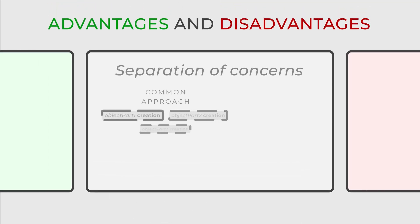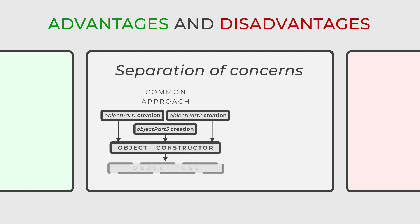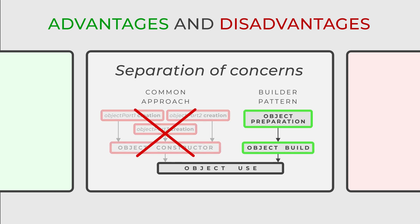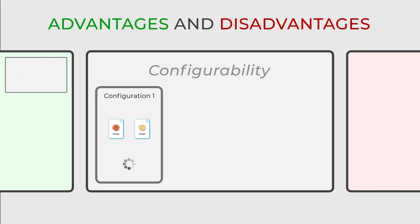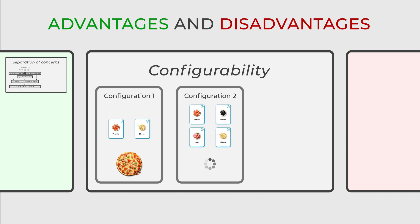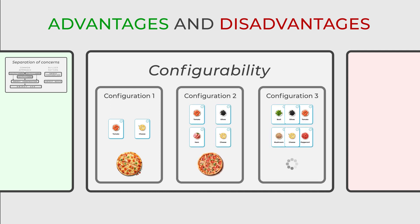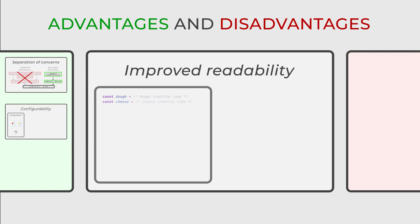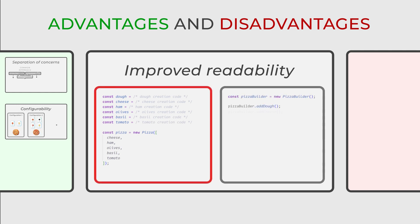The design pattern offers several benefits. Firstly, it promotes the separation of concerns, effectively segregating the build process from the client code. This separation simplifies the management of complex object creation and representation. Secondly, builders enhance configurability, enabling the creation of objects with various configurations while reusing the same building process. Lastly, the pattern enhances code readability, as client code primarily concentrates on high-level object construction rather than delving into detailed construction steps.